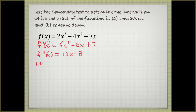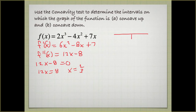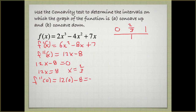Set f''(x) equal to zero to find our critical points. We get 12x equals 8, divide by 12, and x equals 2/3. So we make a sign chart with 2/3 marked. We evaluate the second derivative at x = 0: 12(0) minus 8 equals negative 8, which is negative. And f''(1) equals 12(1) minus 8, which is 4, which is positive.